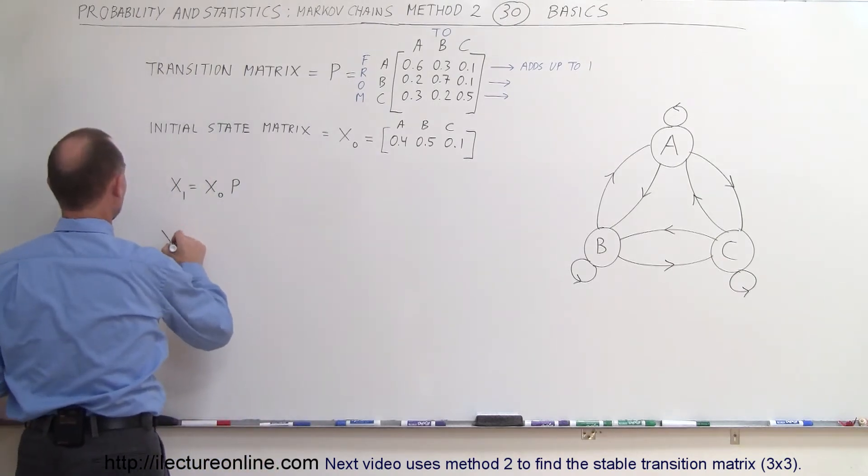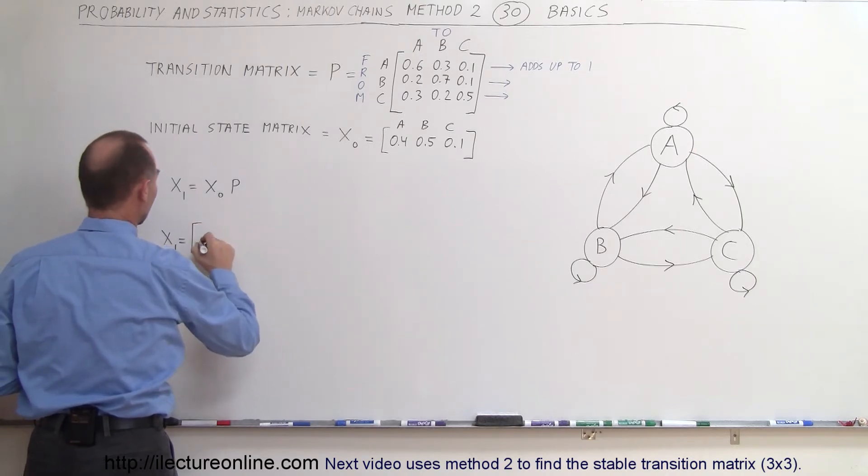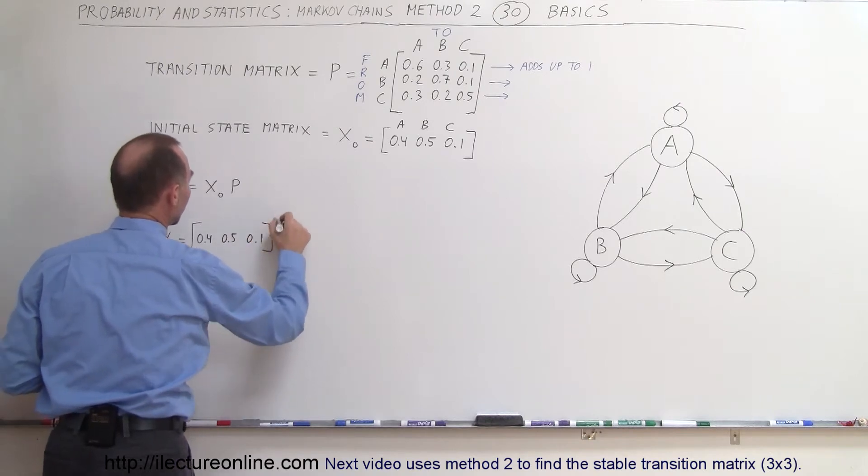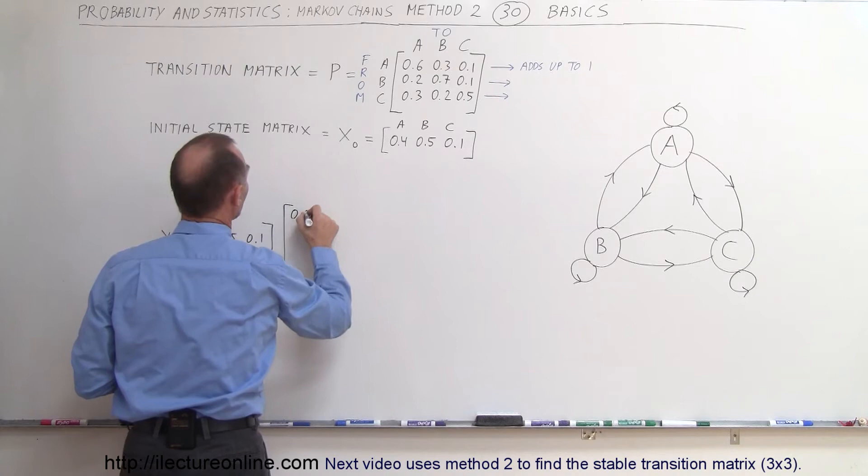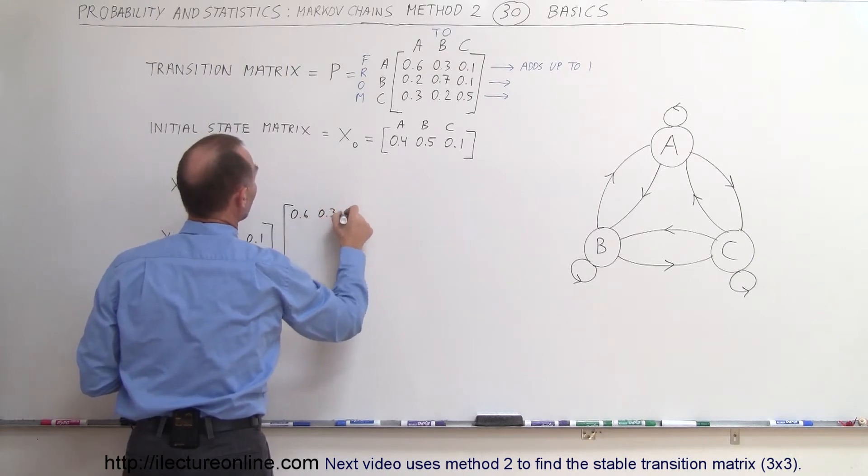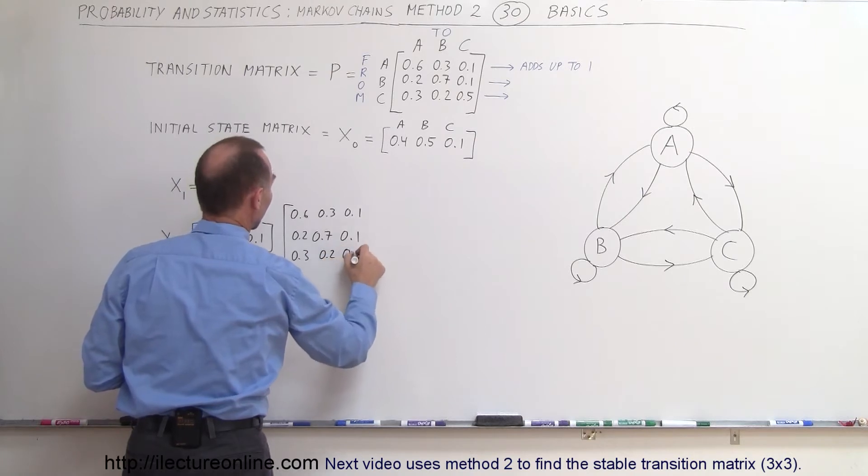So in this case X sub P and let me grab a black pen here. So X sub 1 is going to be X sub not which is the initial state which is 0.4 0.5 0.1 multiplied times the transition state which we have over there 0.6 0.3 0.1 0.2 0.7 0.1 and 0.3 0.2 and 0.5.